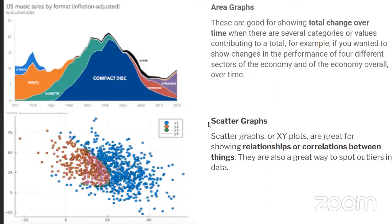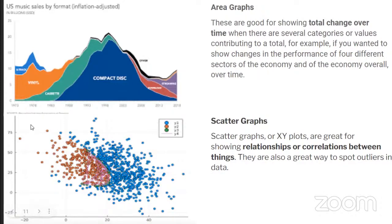We also have scatter graphs, which show the relationship or correlation between two things — just like we have on this diagram with red points and blue points showing their correlation. They are also great ways to spot outliers, which are points on your scatter graph that are quite distant from other points. Scatter graphs are more important in the scientific world where you have to visualize a large number of data points.